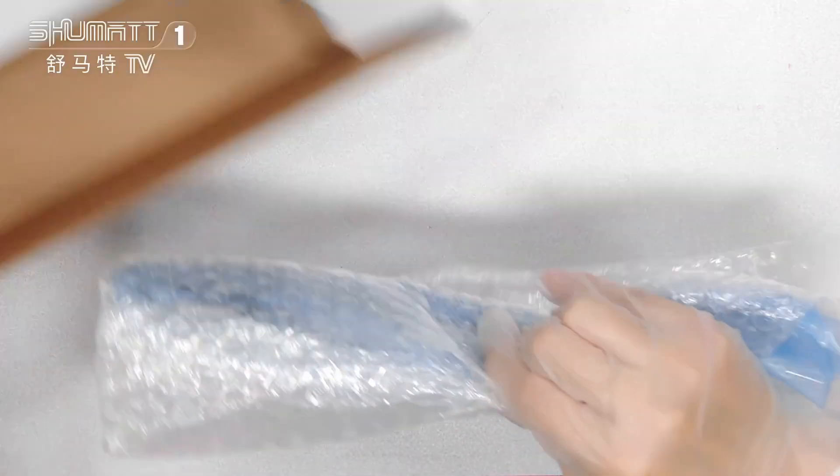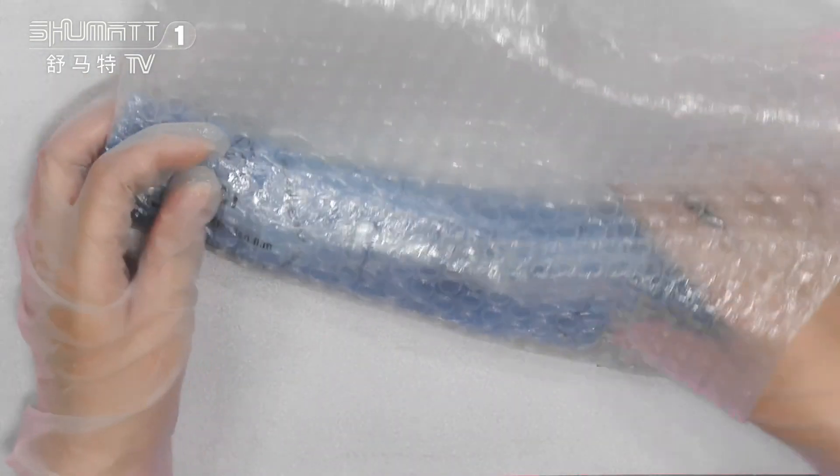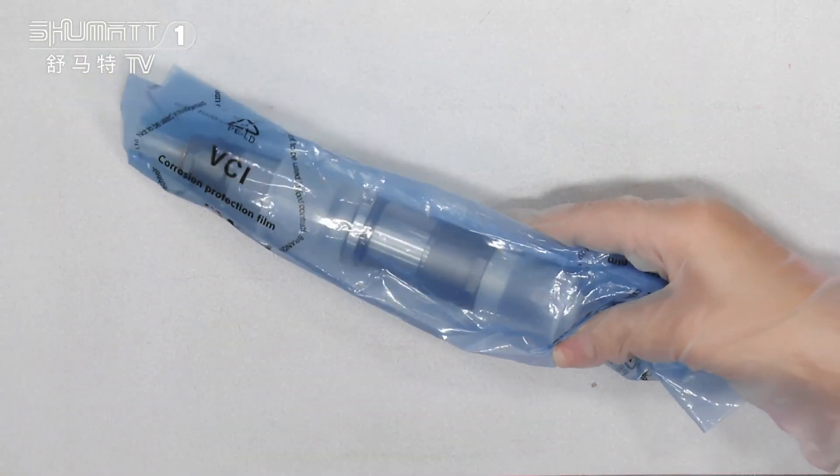The inside, two layers. First layer is transparent. Second layer, VCI anti-rust bag.